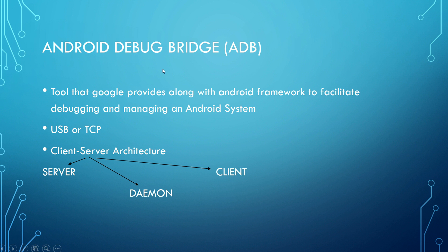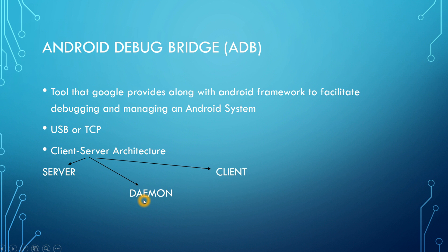Next we will see one of the interesting topics — Android Debug Bridge. ADB is a tool that Google provides along with the Android framework to facilitate debugging and managing an Android system. ADB uses USB or TCP as its transport layer to communicate to an Android device. ADB works on a client-server architecture, which has three components: server, daemon, and client. When you connect your Android device to your PC, the daemon runs on your Android device. The ADB shell or ADB logcat terminal on your PC acts as the client, and the server serves communication between the daemon and the client.